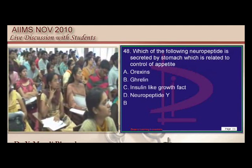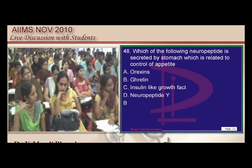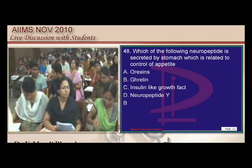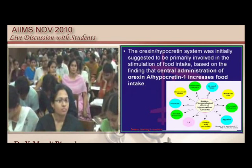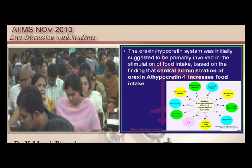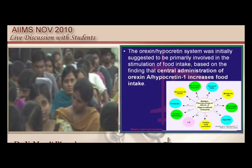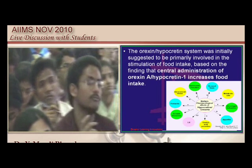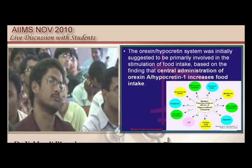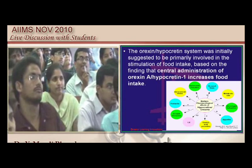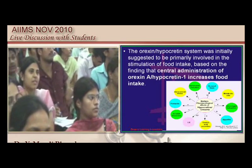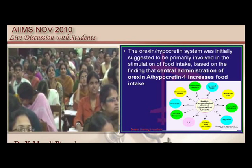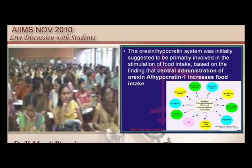What controls our appetite? Orexin increases food intake and has roles in arousal state, metabolic rate, autonomic function, and prolactin secretion. But the examiner's point of view is that the hormone should be secreted by the stomach — that is ghrelin, produced by the fundus of the stomach, which stimulates hunger.